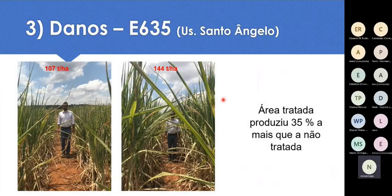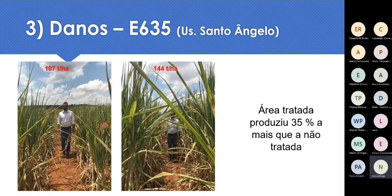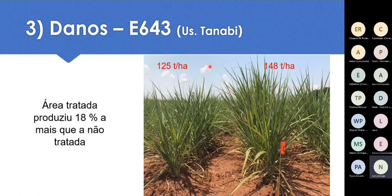Para ter uma ideia da importância dos nematóides, coloquei fotos de um experimento na Usina Santo Ângelo. Essas fotos foram tiradas com 5-6 meses de idade, e aqui está a produtividade na colheita: a testemunha com 107 toneladas por hectare, a área tratada com nematicida com 144 toneladas. A área tratada produziu 35% a mais que a não tratada. Outro exemplo na Usina Tanabi: a área tratada produziu 18% a mais. Esses dados demonstram o quanto os nematóides são parasitos muito importantes para a cana.